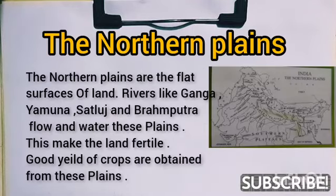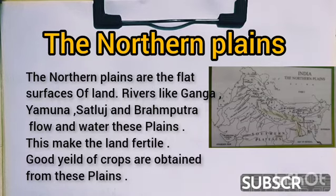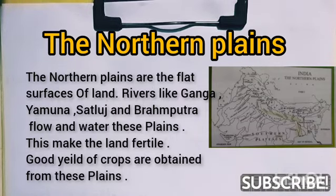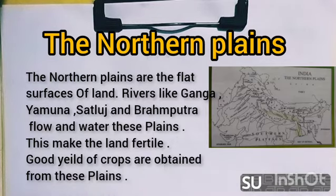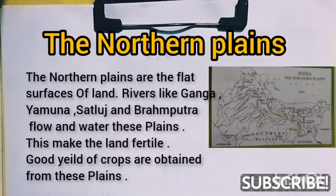The second feature is the Northern Plains. The Northern Plains are flat surfaces of land like river plains. Rivers like Ganga, Yamuna, Sutlej, and Brahmaputra flow through and fertilize the land. These make the land fertile, and good yields of crops are obtained from this place.